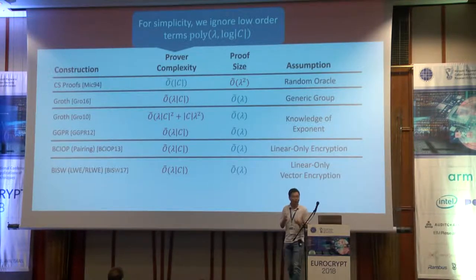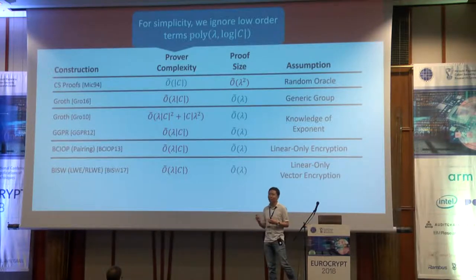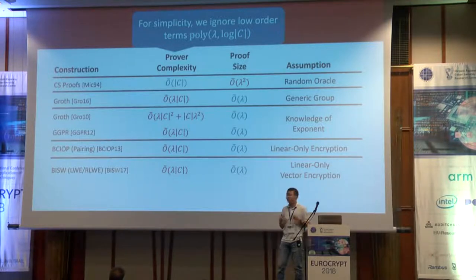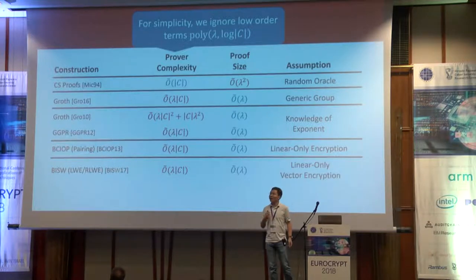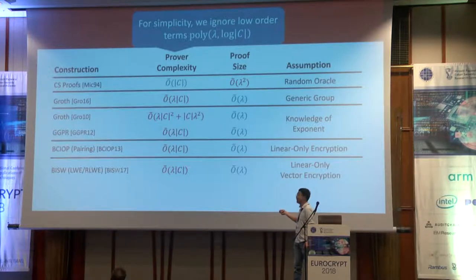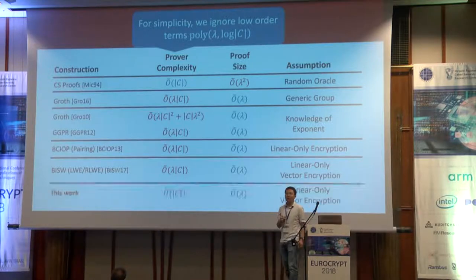Alternatively, we can consider SNARK systems proposed more recently, based either on concrete assumptions over bilinear maps or over lattice-related assumptions. All of these constructions provide quasi-optimal succinctness — to achieve λ bits of soundness, the proofs in these systems are only about λ bits long. However, none of these systems provide quasi-optimal prover complexity: the amount of work the prover has to invest to generate a proof depends multiplicatively on the security parameter.